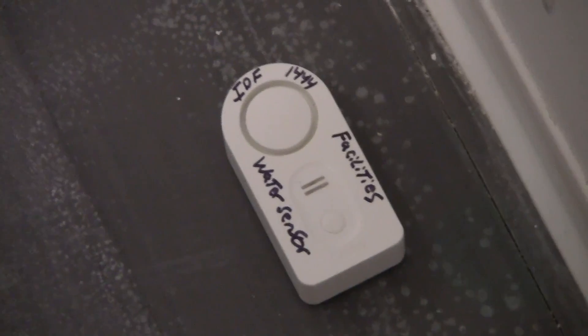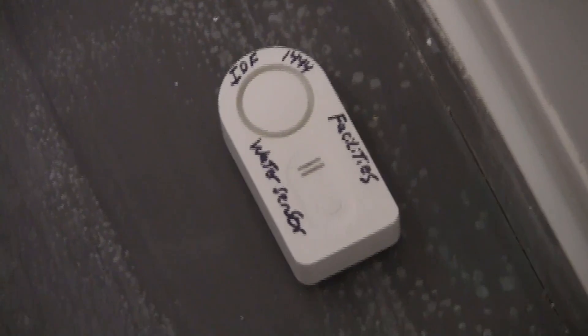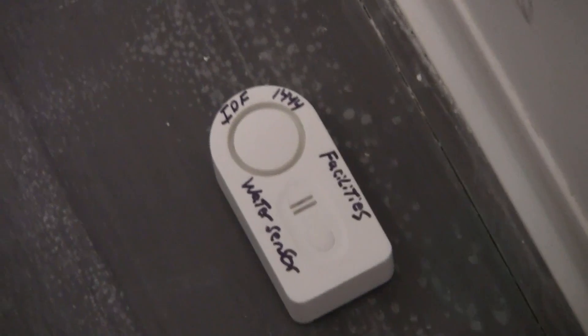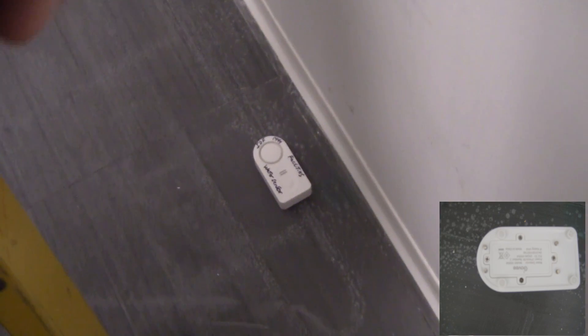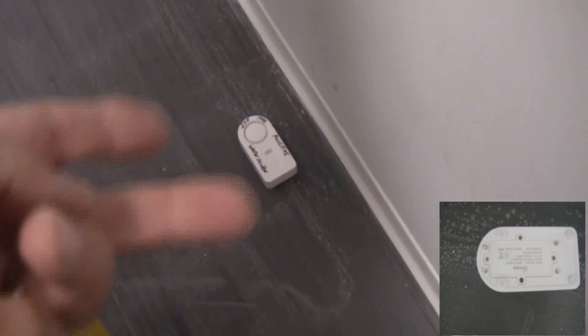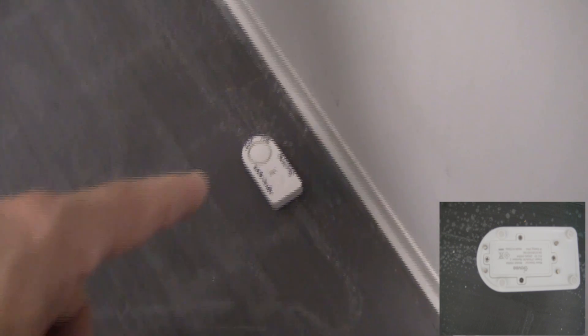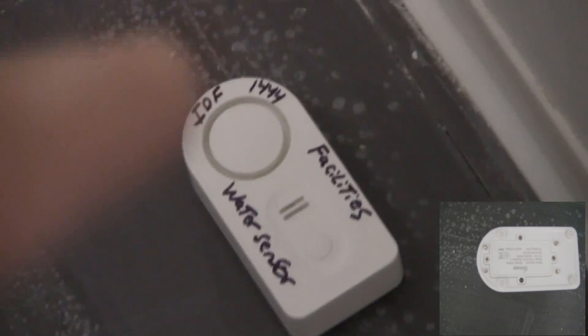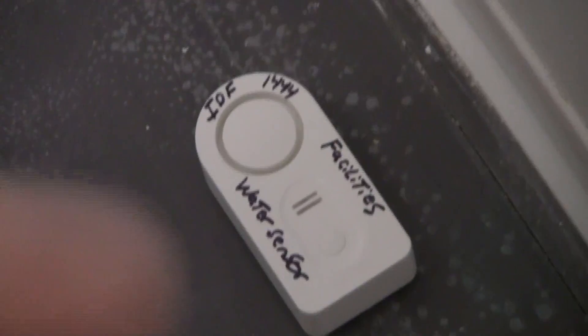This here is the Govi water leak detector and you see it's got two prongs on the top there and underneath it has prongs too so that if any water goes on this sensor either on the top of the sensor or on the floor it's going to send an audible alarm and it's going to ping my phone.